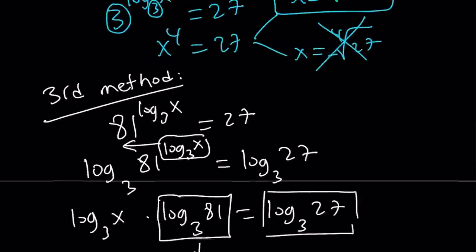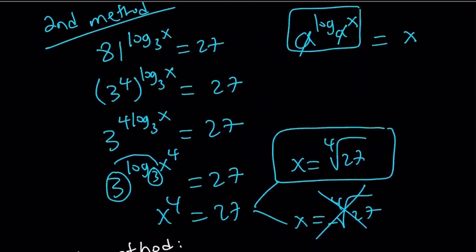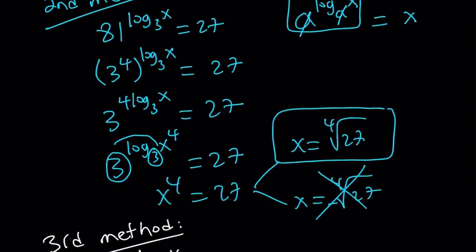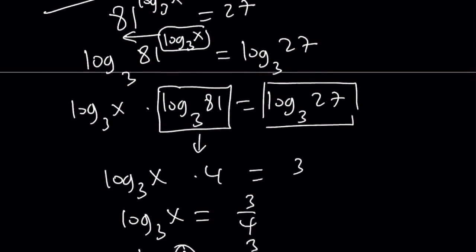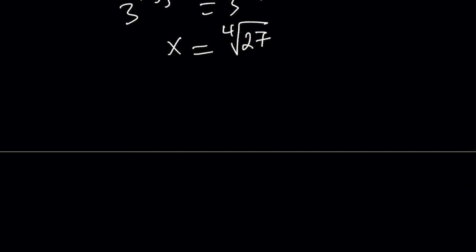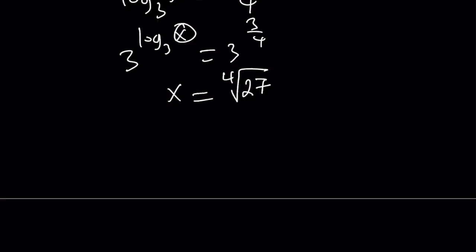And notice that with the second method, we got two solutions because we got a polynomial equation like this with the even power. But we had to discard one of the solutions, right? But with the other methods, notice that we're only getting a single solution, right? Okay. Now let's proceed with the fourth method. And this will be the last one.